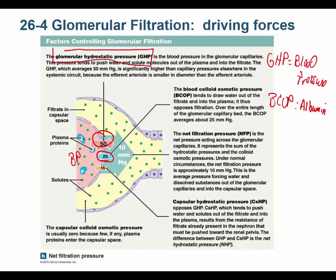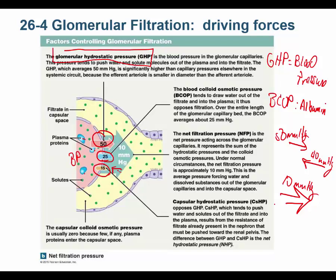With blood pressure at 50 and blood colloid osmotic pressure at 25, you have a net of 25 so far. But you also have capsular hydrostatic pressure of 15 mmHg pushing back in. So 25 plus 15 equals 40 mmHg pushing back in, versus 50 mmHg pushing out — net filtration pressure is 10 mmHg. That means filtration occurs and filtrate is produced, which becomes urine.